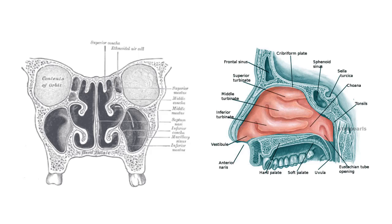In the upper respiratory tract, the nasal cavity contains three nasal conchae: superior, middle, and inferior. Their purpose is to create turbulence, which allows air to remain in the nasal cavity a little longer so it can adjust to body temperature, become humidified, and have debris removed before entering the rest of the airway.